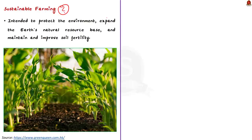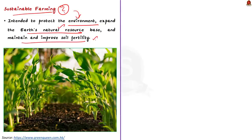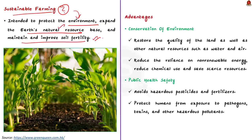Agriculture places significant pressure on natural resources and the environment. Sustainable agricultural practices mainly focus on protecting the environment, expanding the earth's natural resource base, and maintaining and improving soil fertility. The first advantage is that sustainable agriculture contributes to the conservation of the environment — it helps restore the quality of land as well as other natural resources such as water and air.